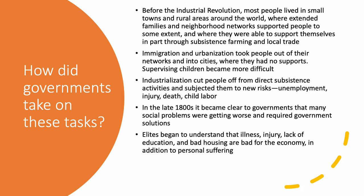Industrialization cut people off from direct subsistence activities like growing their own food and created new risks of injury and death. In the late 1800s, it became clear to governments all around the world that a lot of these social problems were getting worse. Social, economic, and political elites began to understand that illness, injury, lack of education, bad housing — all these social problems are bad for the economy, in addition to causing personal suffering.